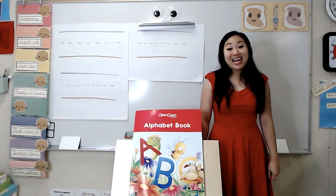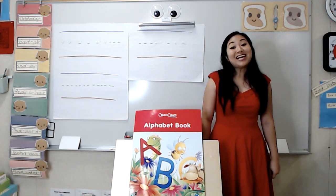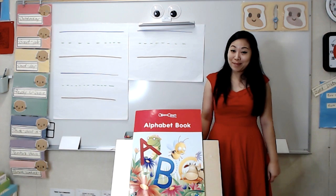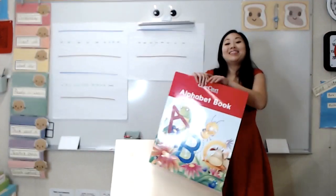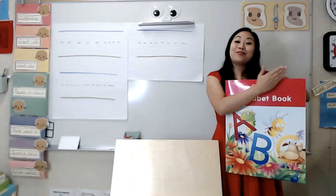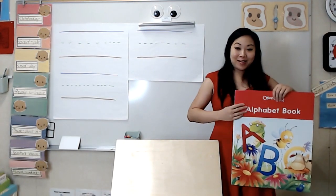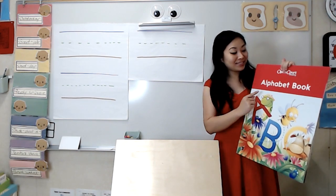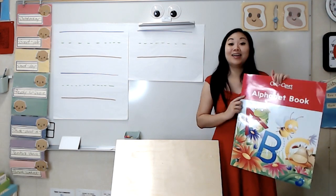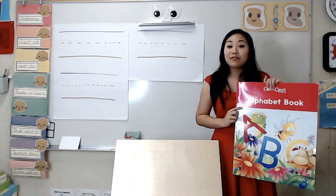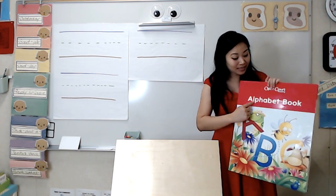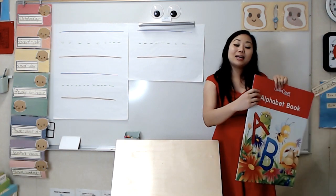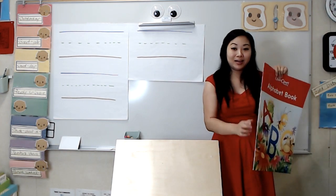Hello friends! Today we are going to take another look at our alphabet book. This is the front cover, back cover, and the title. The title of this book is Alphabet Book. And this is the spine.